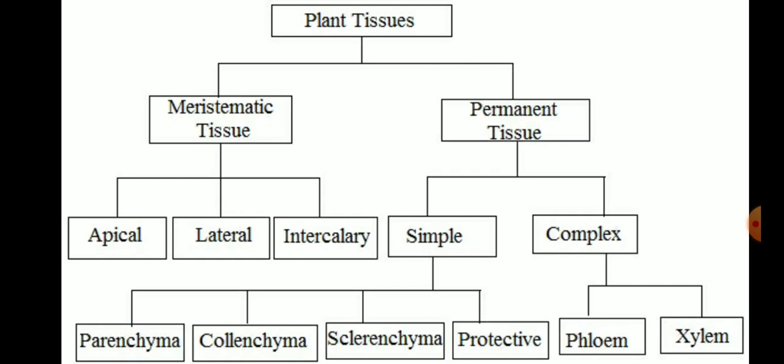Phloem helps in the conduction of food and xylem helps in the conduction of water and minerals. This is a very important flowchart you need to remember. Meristematic tissue is divided into apical, lateral, and intercalary meristem. Permanent tissue is divided into simple and complex. Simple is further divided into parenchyma, colenchyma, sclerenchyma, and protective tissue. Complex is divided into phloem and xylem. We will study each of them one by one.